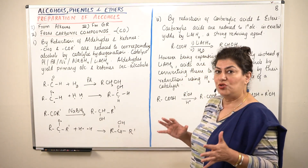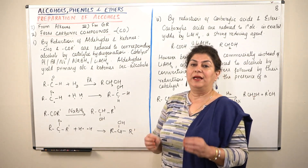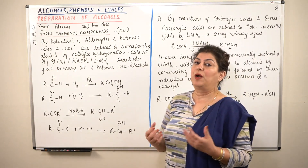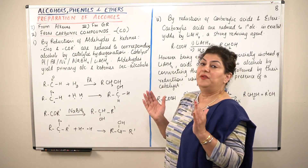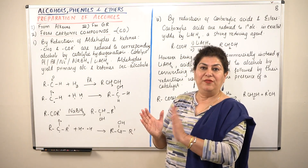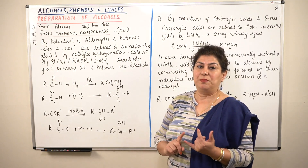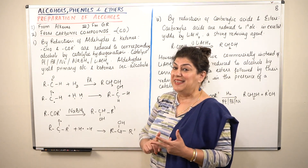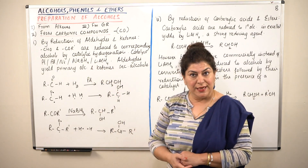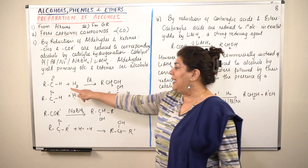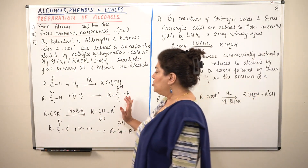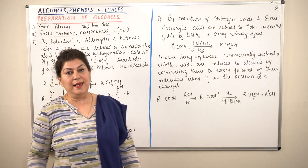This is what is important to remember: how can you prepare alcohols from aldehydes and ketones? You can get alcohols from them by reducing them. Reduction can be done by catalytic hydrogenation using a catalyst with hydrogen gas — the catalysts being platinum, palladium and nickel — or you can use reducing agents like sodium borohydride and lithium aluminum hydride. When the reduction takes place, aldehydes give you primary alcohols while ketones give you secondary alcohols.